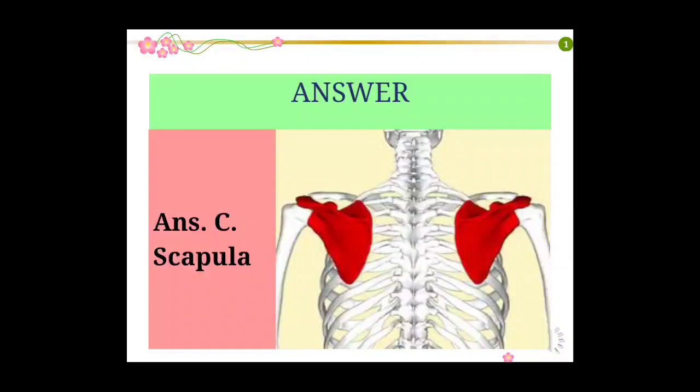Answer: Scapula. Scapula is a flat triangular bone located at the back of the trunk which serves as a site for attachment of many muscles.